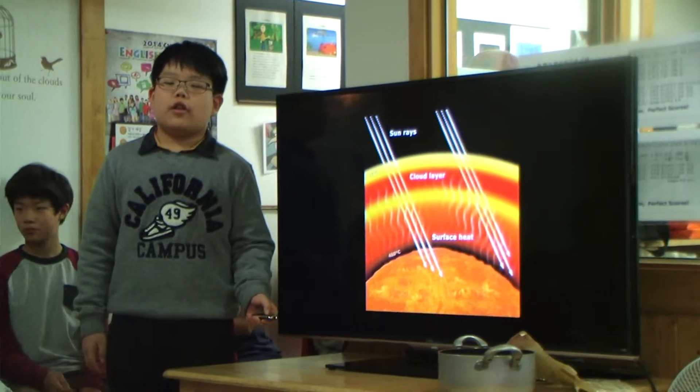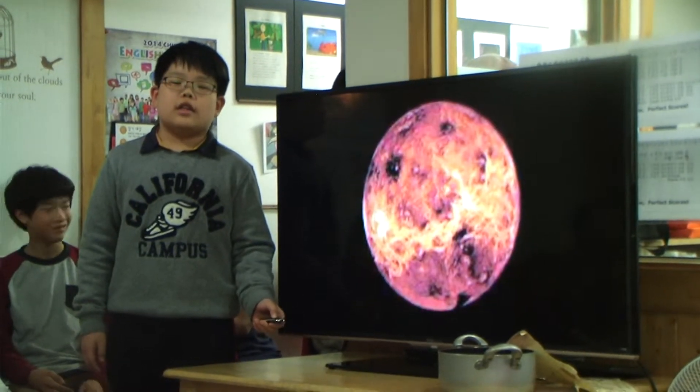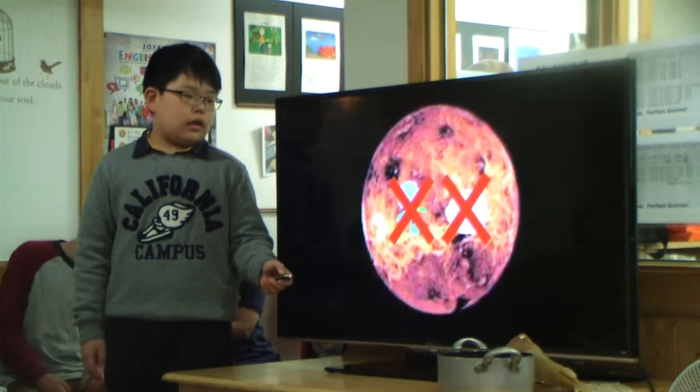The cloud cover on Venus traps heat. Venus is very hot. It is too hot for plants and animals to live.